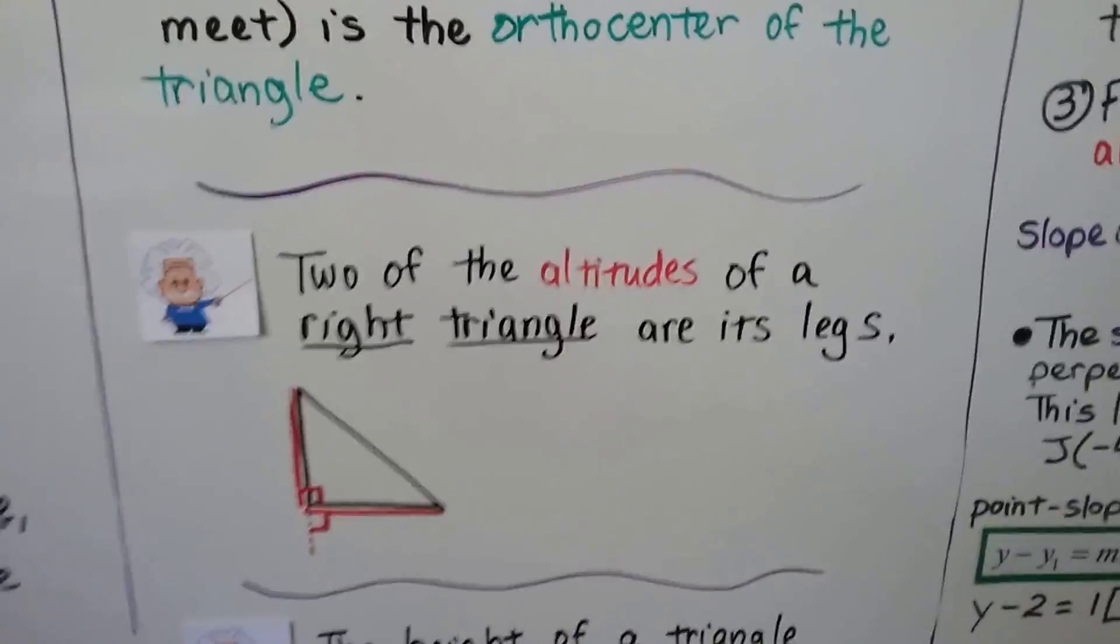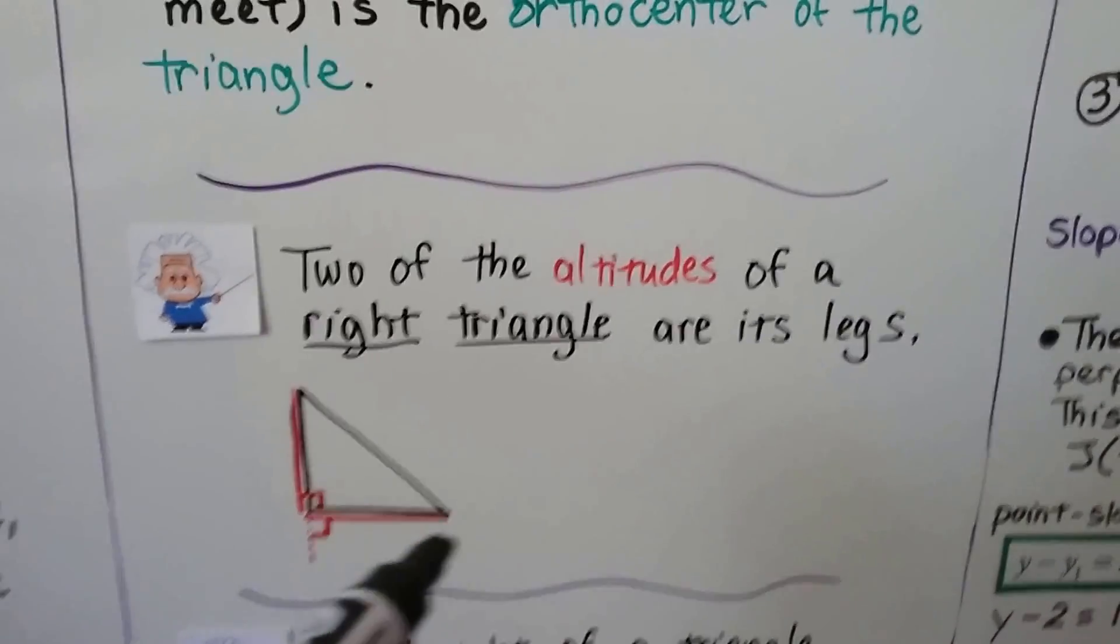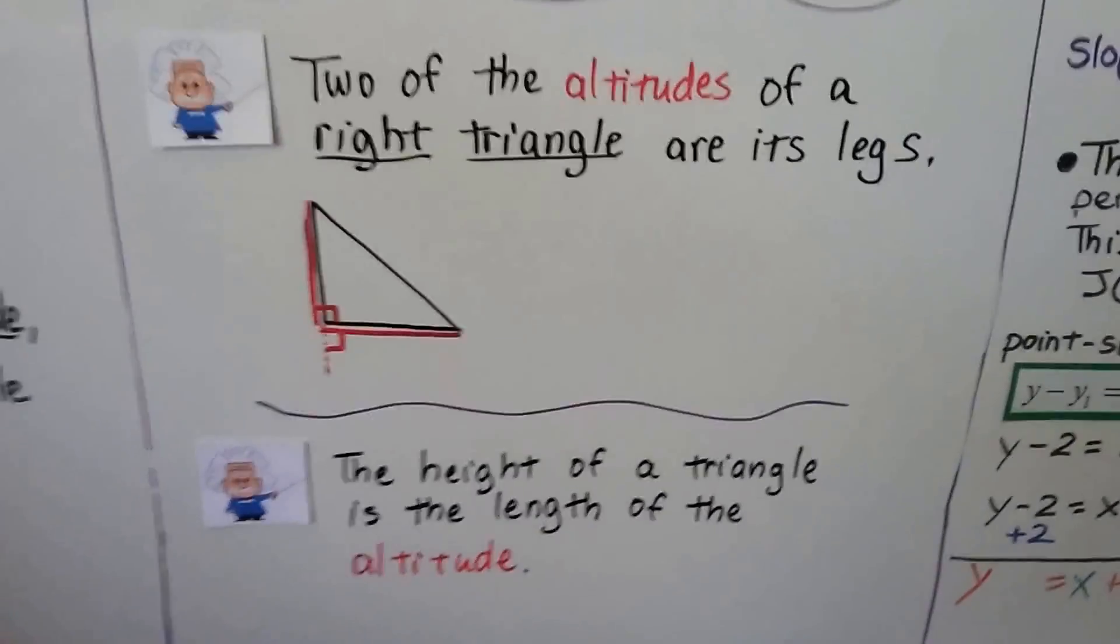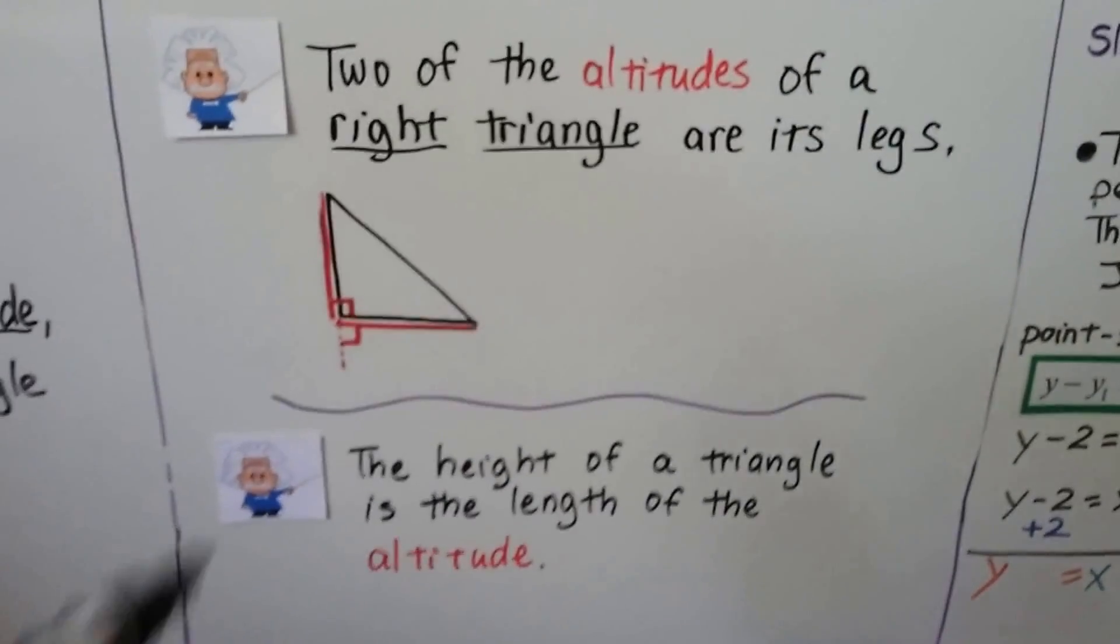And two of the altitudes of a right triangle are its legs. So that's for a right triangle. And the height of a triangle is the length of the altitude.